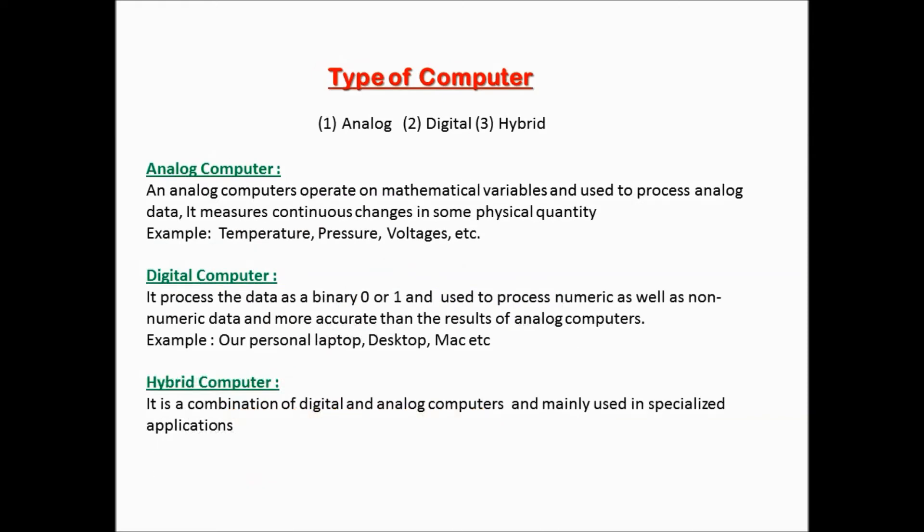Types of computer: we can divide the computer by the working process. 1. Analog, 2. Digital, 3. Hybrid. Analog computer: an analog computer operates on mathematical variables and is used to process analog data. It measures continuous changes in some physical quantity, for example, temperature, pressure, voltages, etc. Digital computer: it processes data as binary 0 or 1 and is used to process numeric as well as non-numeric data, and is more accurate than analog computers. Examples: personal laptop, desktop, Mac, etc. Hybrid computer: it is a combination of digital and analog computers and is mainly used in specialized applications.